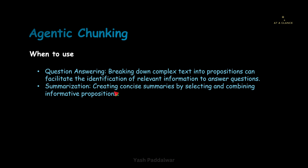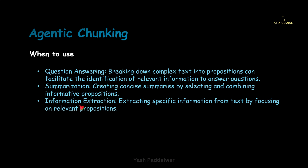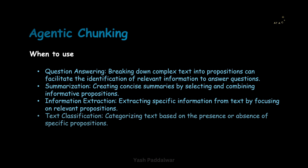In the summarization case also, you can use this — it will create concise summaries by selecting and combining the informative propositions. Similarly, we can use this agentic chunking strategy in information extraction — extracting information from text by focusing on relevant propositions. I would suggest you explore this because it is a very powerful strategy — you can use it in almost every single task to make your flow better. Also, you can use it in text classification to categorize the text based on the presence or absence of specific propositions.